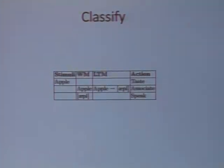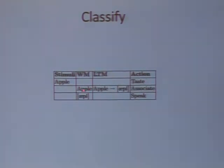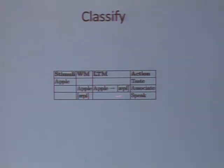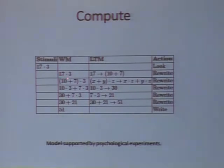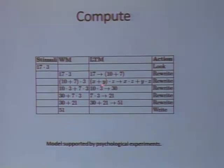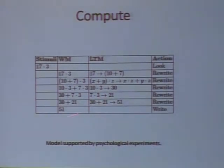Here are some examples of computations in this framework. It can classify — we perceive an apple, take it into working memory with an attention operation, and use the association rule to activate the connection between the taste and the sound of 'apple'. This happens automatically, and then we use the speak module to produce speech from the phonetic text. We can also compute mathematical expressions like 17 times 3: we rewrite it as 10 plus 7 using a rule in long-term memory, and continue using algebraic rules and table entries to obtain the final result.